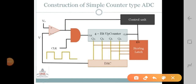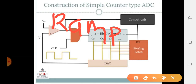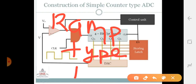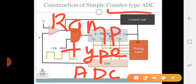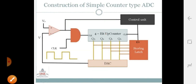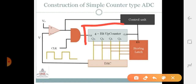Good morning. Today we will see ramp type ADC. It is also known as counter type ADC because we are using here a 4-bit up counter. This is the block diagram of ramp type ADC.